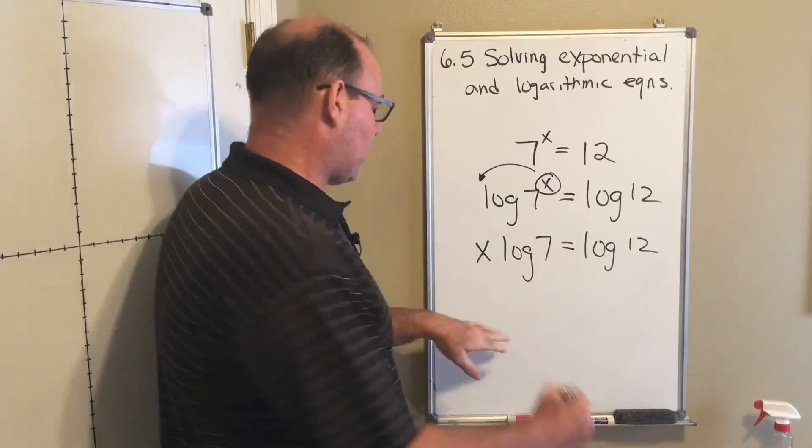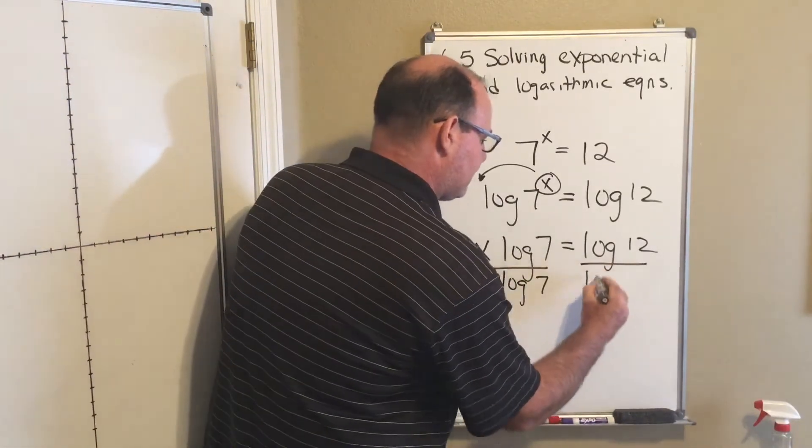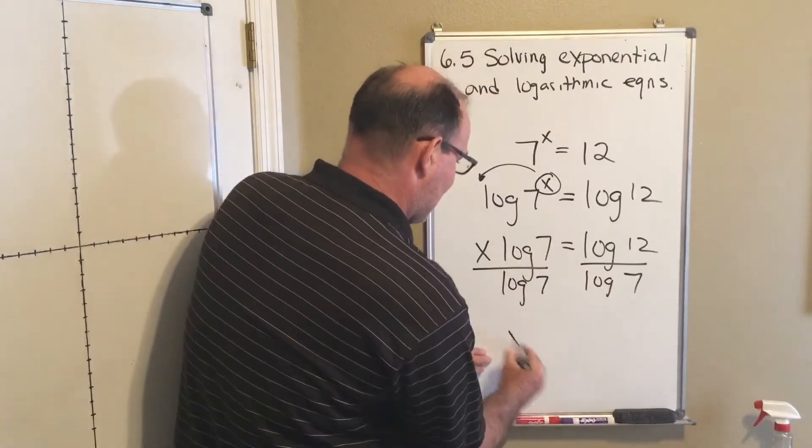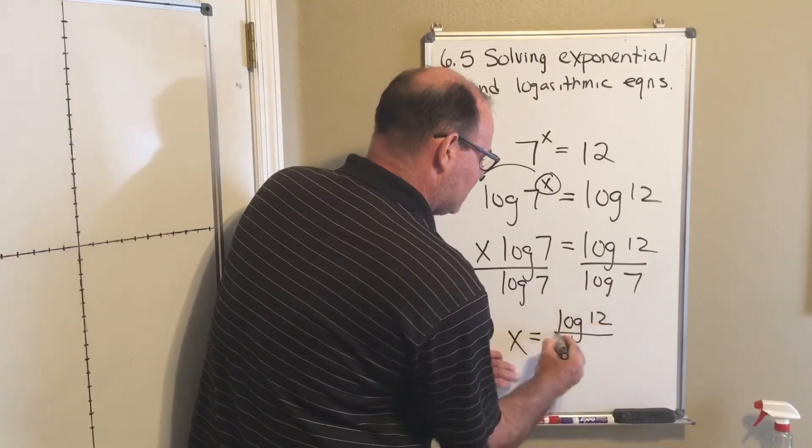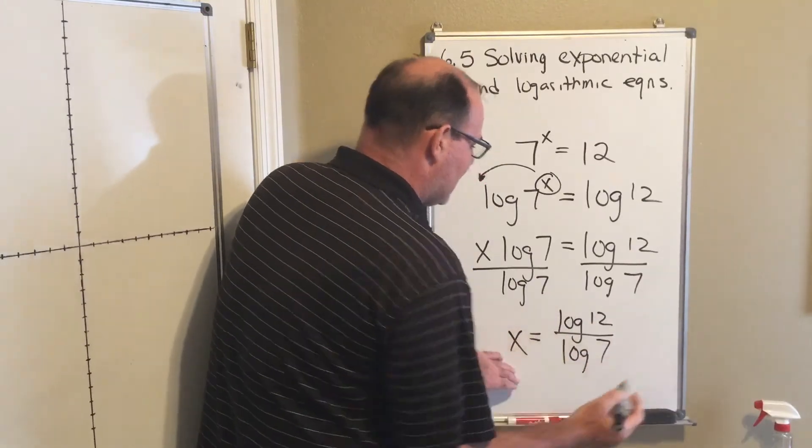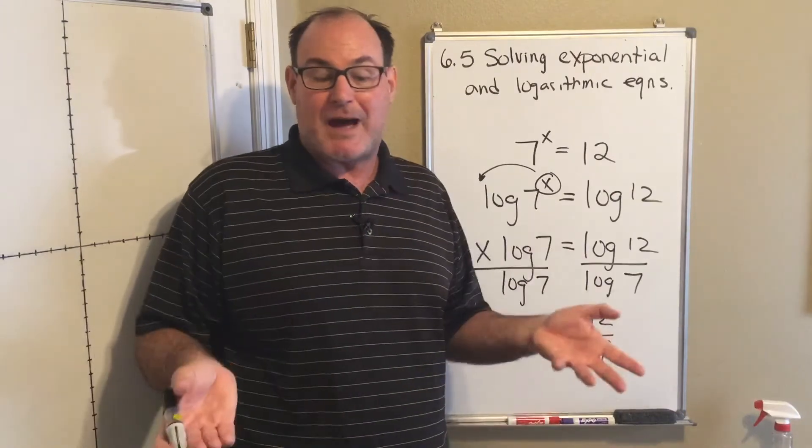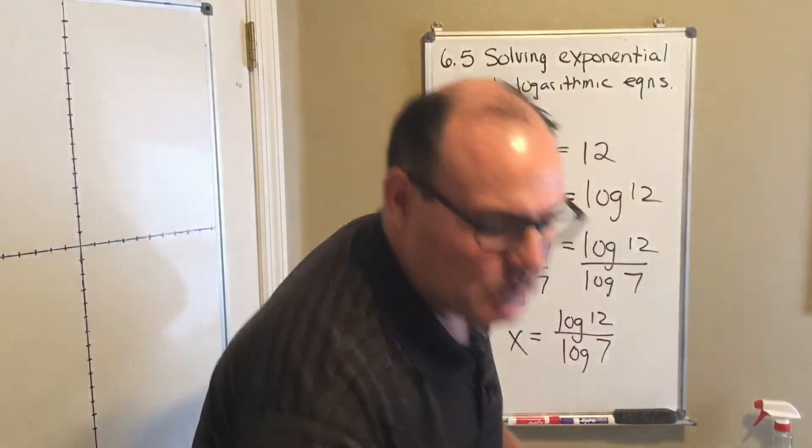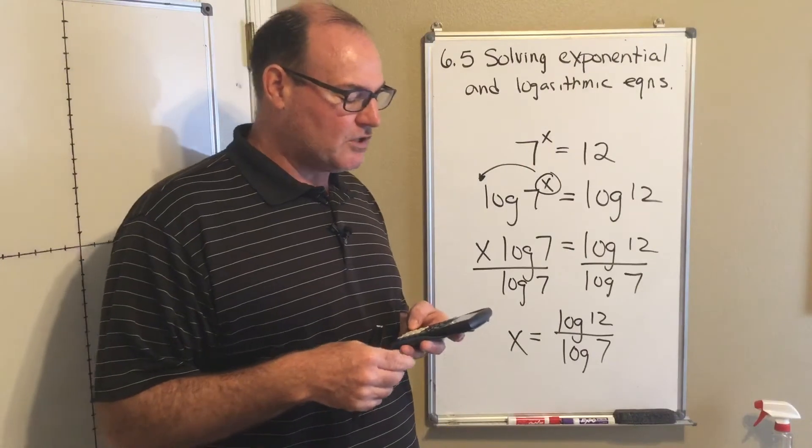So I'm almost done with this problem. I'm going to now divide both sides by the log of 7 and x is equal to log of 12 divided by log of 7. Now in most cases, you're just going to leave the answer like that. That's my preference, but I know sometimes you like to get some decimals. So I'm going to get a four digit decimal here...